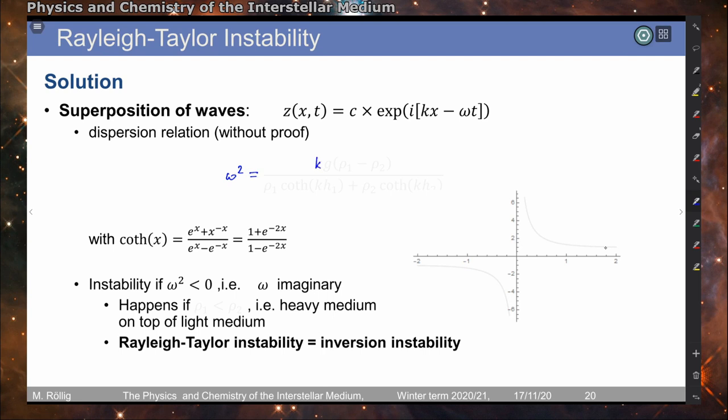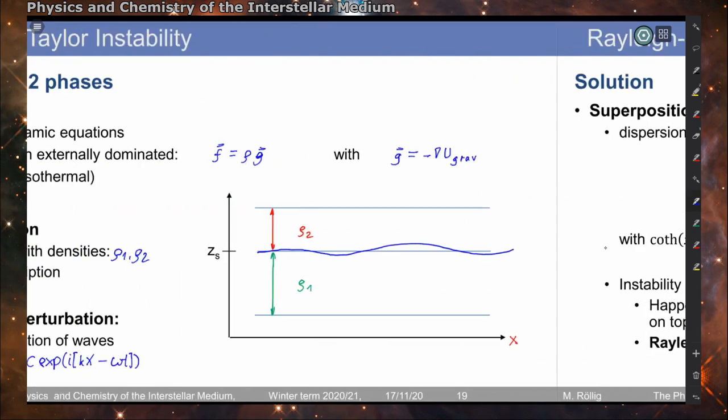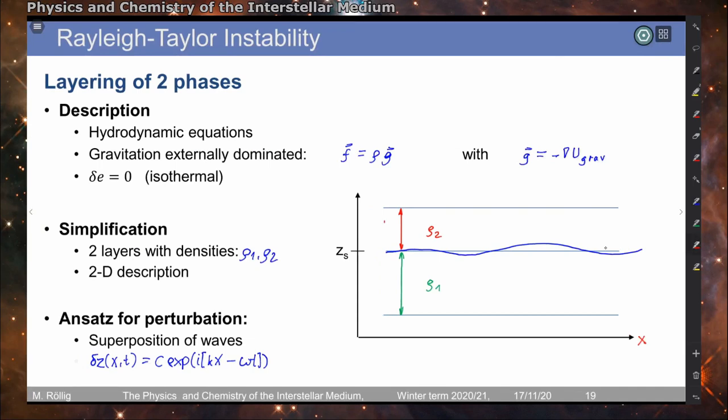We have in the numerator k times the gravitational acceleration and then rho1 minus rho2, divided by the denominator rho1 times the cotangent hyperbolic of k H1 plus rho2 times the cotangent hyperbolic of k H2. And H1 and H2 is exactly here the thickness of our two layers.